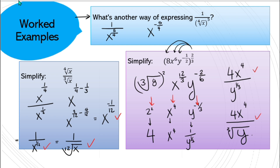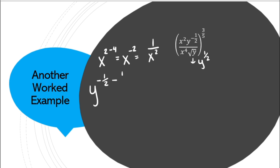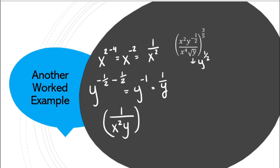One last example to wrap up exponent law review. For the x's: x² minus x⁴ = x to the negative 2 = 1 over x². For the y's: y to the negative 1/2 minus y to the 1/2. Doing that math gives y to the negative 1, which is 1 over y. So far I have 1 over x²y to the power of 3/5.